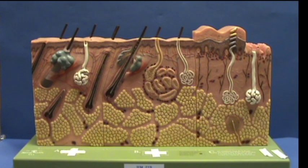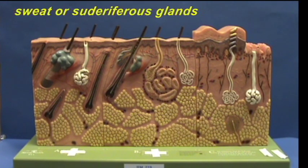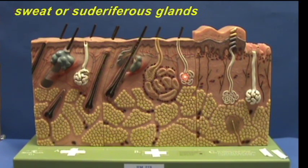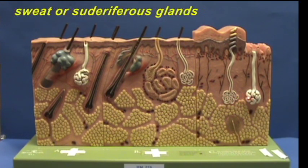This model shows sweat glands, or sudoriferous glands, and you can see four of them represented in different regions. We have one over here in the scalp, one over here in the armpit next to another type of sweat gland, and then two that are located in the sole of the foot. These two have been cut open so that you can see profiles.